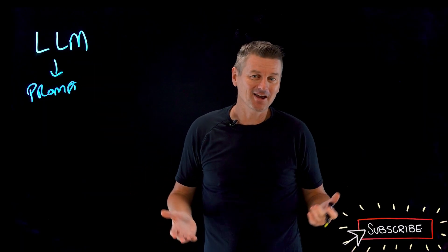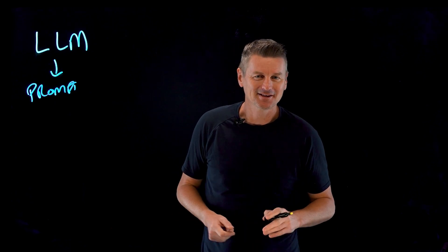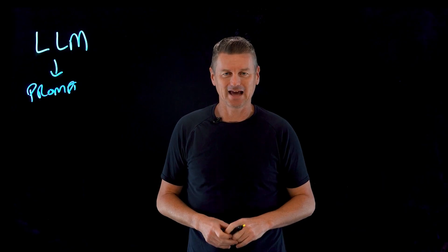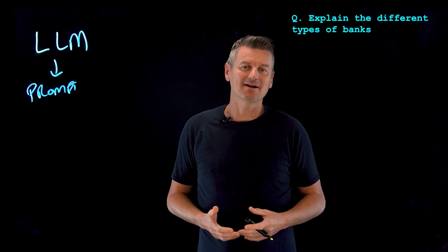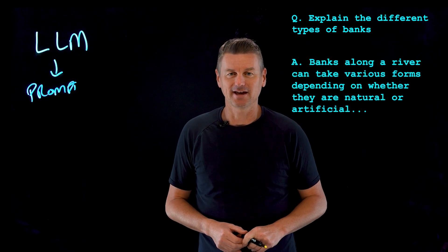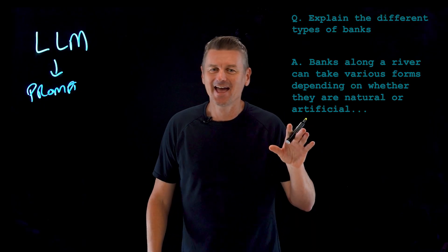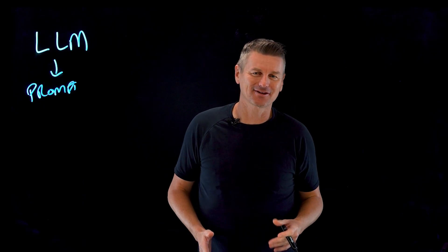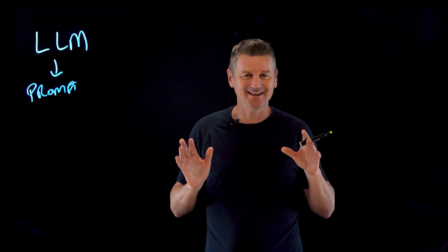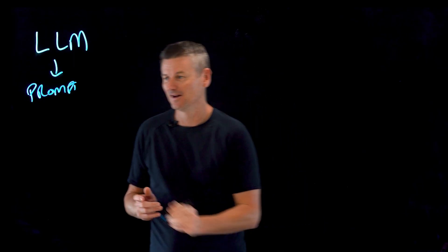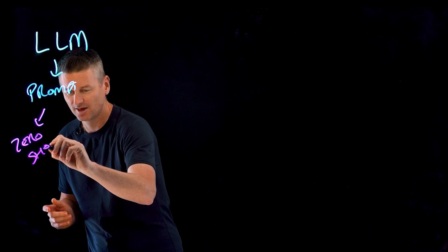Let's take a look at an example. I'm working on a homework assignment for my Econ 101 class and I need some help, so I issue the following prompt to a large language model: 'Explain the different types of banks.' The LLM responds with: 'Banks along a river can take various forms depending on whether they are natural or artificial.' Here I am trying to understand the difference between a credit union and an investment institution, and it's talking to me about riverbanks. This is an example of zero-shot prompting.